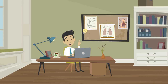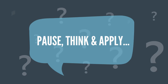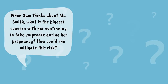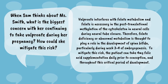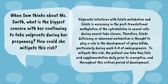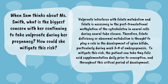Looks like it's time to rise and shine. Wow, that was an amazing dream — I am definitely ready to talk to Dr. Smith about our preconception patient today. Let's pause, think, and apply: when Sam thinks about Miss Cooks, what is the biggest concern with her continuing to take valproate during her pregnancy, and how could she mitigate this risk? Valproate interferes with folate metabolism, and folate is necessary in the post-translational methylation of the cytoskeleton in neural cells during neural tube closure. Therefore, folate deficiency or abnormal metabolism is thought to play a role in the development of spina bifida, particularly during weeks 3 to 4 of embryogenesis. To mitigate this risk, the patient could take folic acid supplementation prior to conception and throughout this critical period of development.